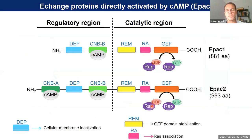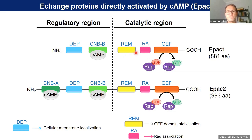To explain how these proteins work: the two isoforms EPAC-1 and EPAC-2 share the same structural organization. In the C-terminal part, there is a catalytic region containing a GEF domain, a catalytic domain which can switch on the small GTPase RAP. The RAS exchange motif contributes to stabilize this catalytic region. In the N-terminal part, there is the regulatory region containing a high-affinity binding site for cyclic AMP. In EPAC-2, there is an additional cyclic AMP binding site whose function is not very well known — it could be involved in cellular membrane localization, like the DEP domain.